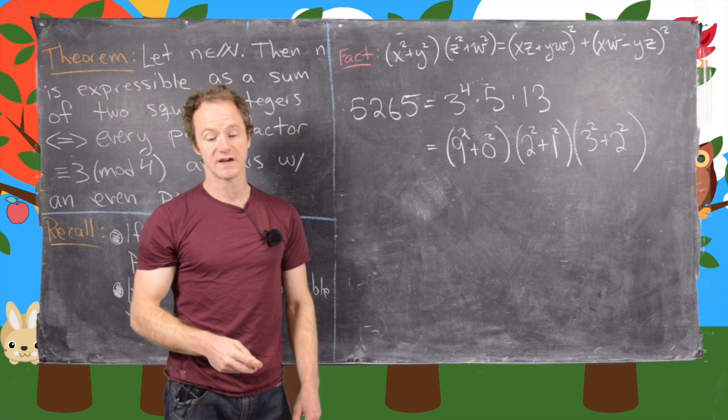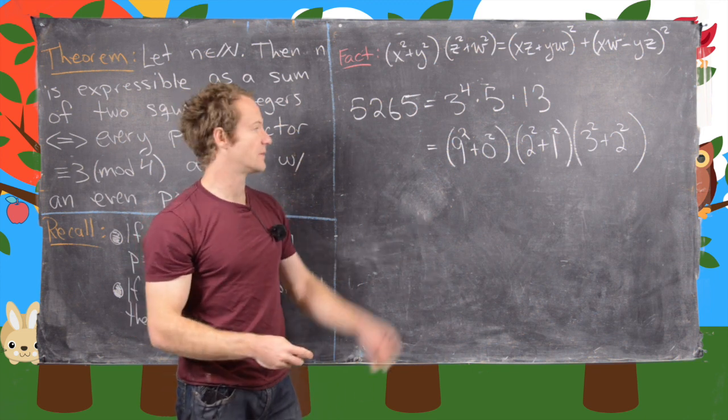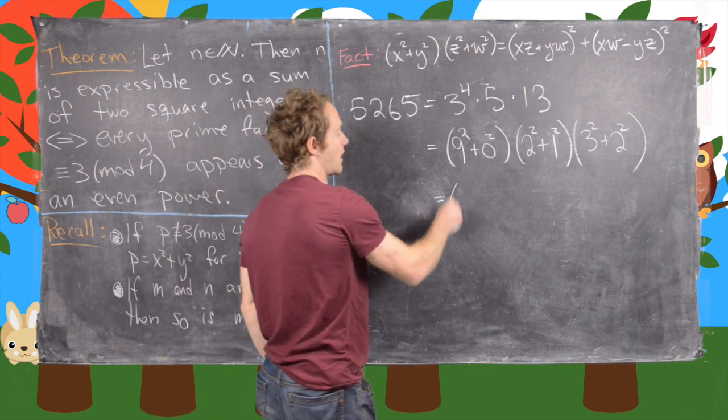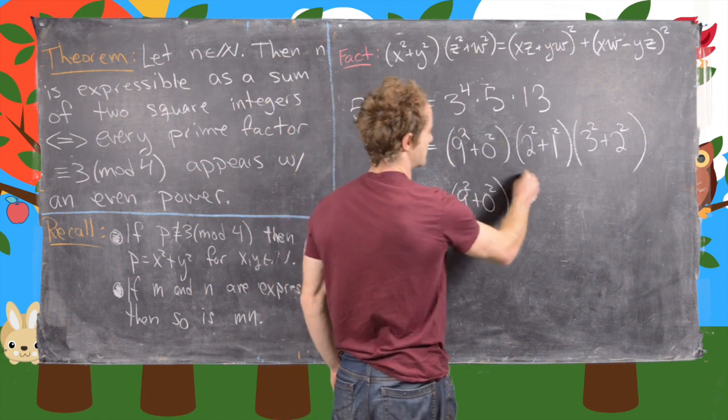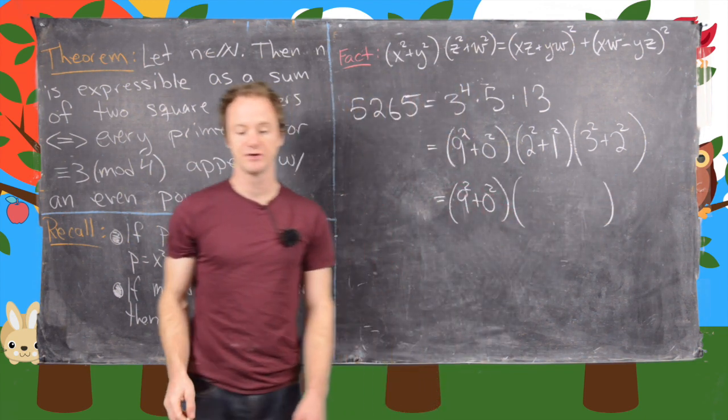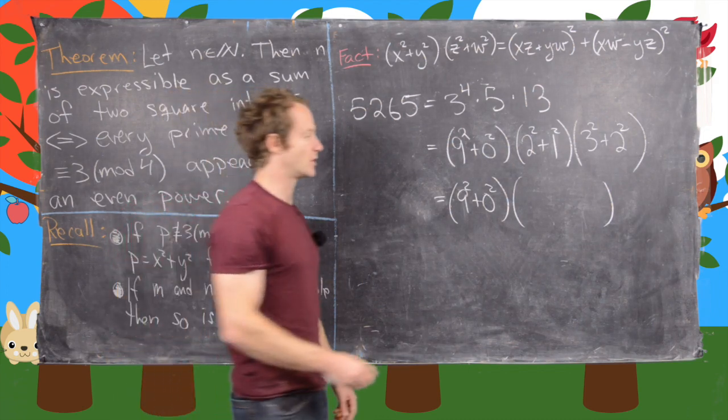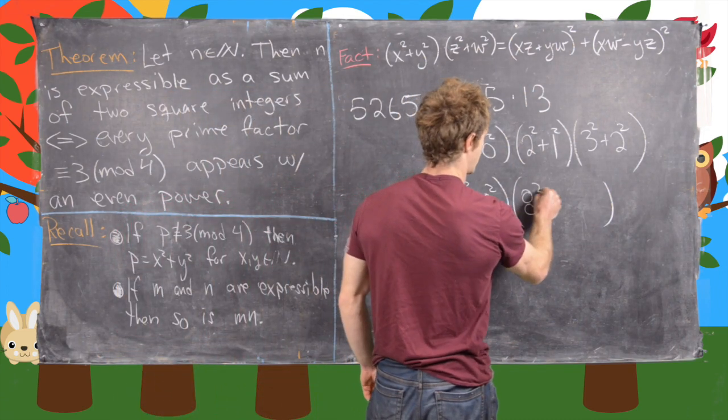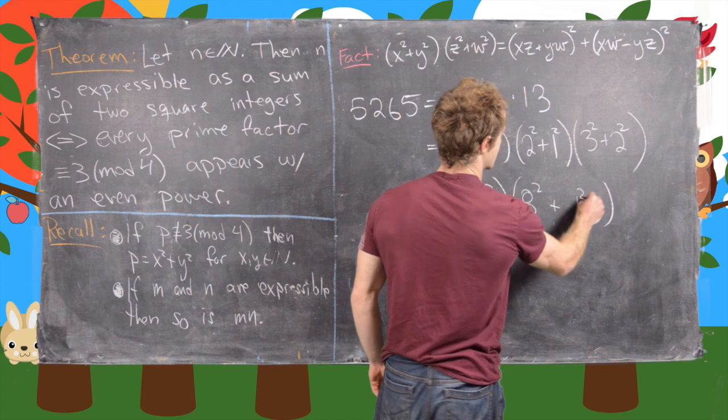Now we'll do the same thing again. So I'm going to put the last two together. So I'll bring my 9 squared plus 0 squared down. And then putting these last two together, we get 8 squared plus 1 squared.